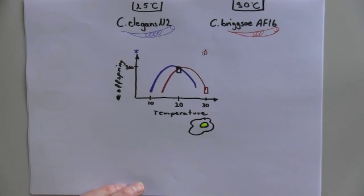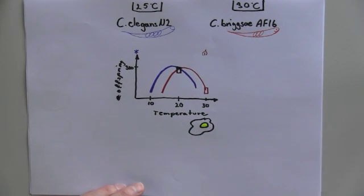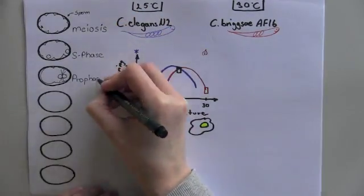We were surprised to find that cell division in C. elegans failed at 30 degrees, while cells of C. briggsae were healthy. Therefore, we decided to characterize the temperature dependence of cell division in both species.